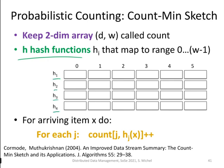h1, h2, h3, and h4, mapping the elements to a range between 0 and w-1. This array we call count.